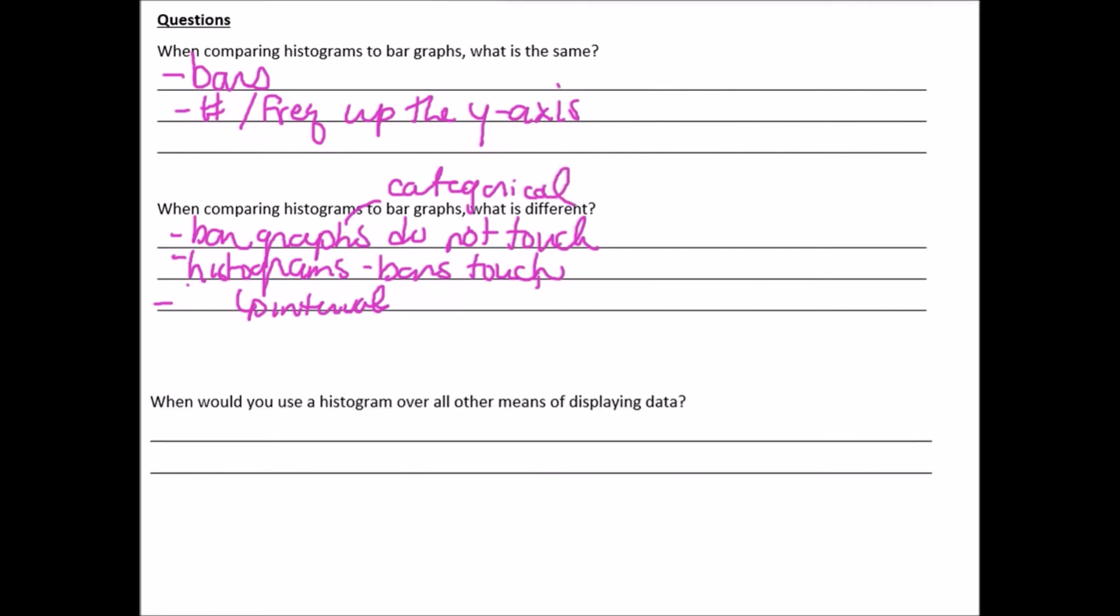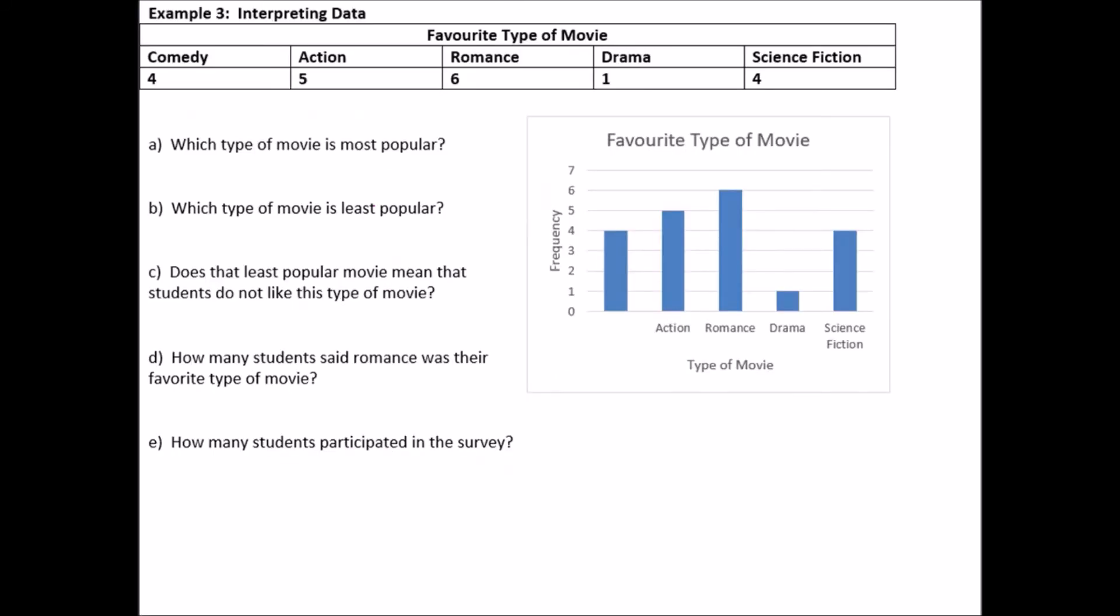And histograms have intervals. Whereas bar graphs are categorical. And there's one more question. When would you use a histogram over all other means of displaying data? This is when you're dealing with an interval. And it can either be an interval that's already set, or it can be data with a wide range and then you put it into intervals.